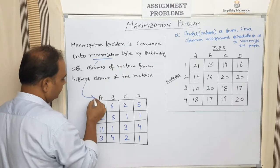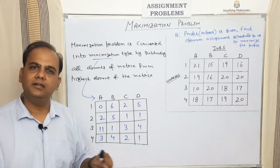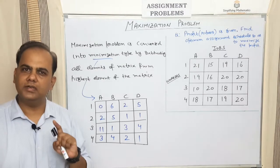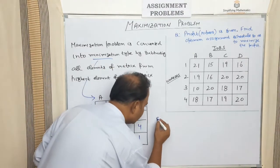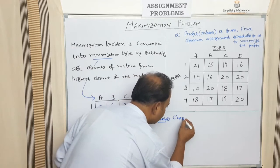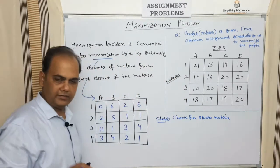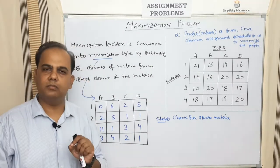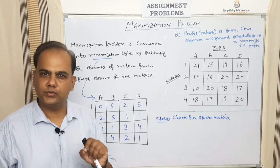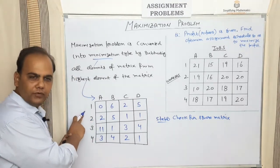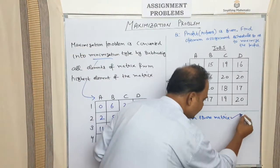This converted problem is now of minimization type. After converting to minimization, you apply the Hungarian method to find the optimal solution. The very first step in the Hungarian method is to check for a square matrix — that is, check whether the problem is a balanced assignment problem or unbalanced. Balanced means the matrix should be square: number of rows equal to number of columns. Here there are four rows and four columns, so this is a balanced assignment problem and the first condition is satisfied.